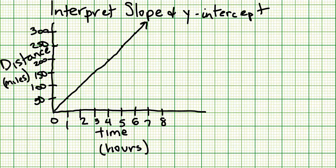When working with graphs involving lines, it's important to determine what the different parts of the graph mean. Today we're going to look at how to interpret what the slope and the y-intercept mean for a given graph.